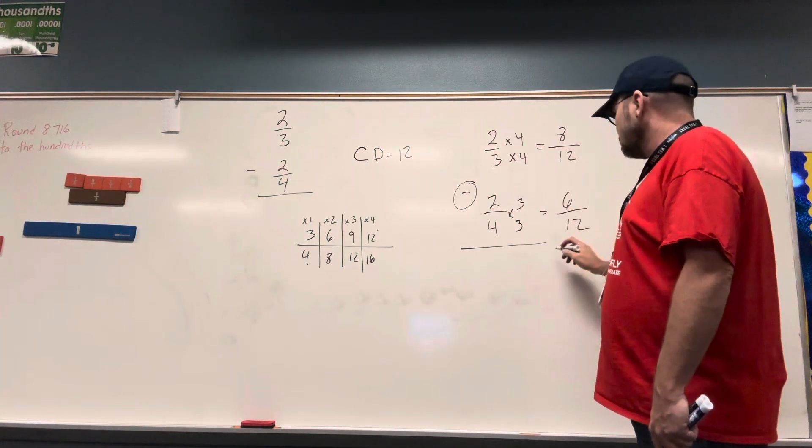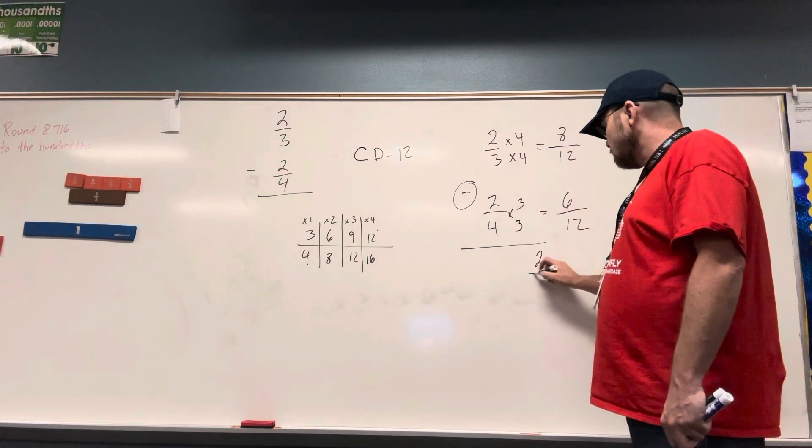8 twelfths minus 6 twelfths is? 2. 2 over? 12.